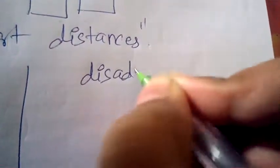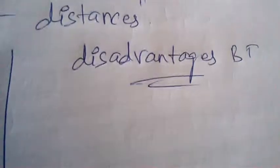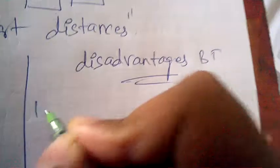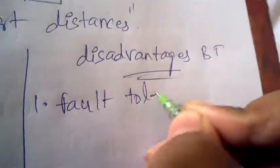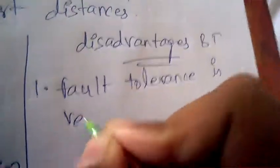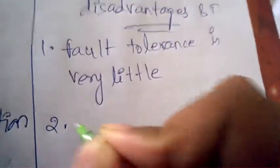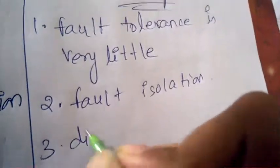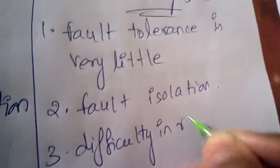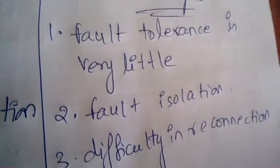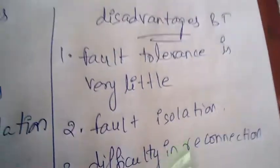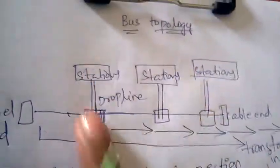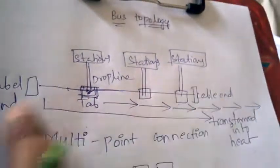Bus topology also has disadvantages. The disadvantages are: fault tolerance is very little, fault isolation is difficult, and there is difficulty in reconnection. Fault tolerance means — for example, if a device fails or if the architecture has any problem, it takes some time to recover.